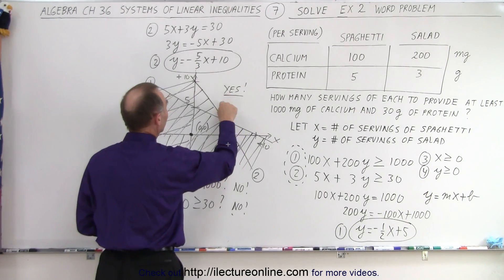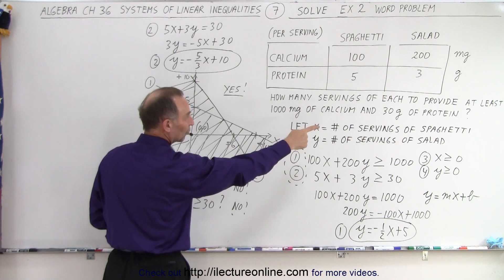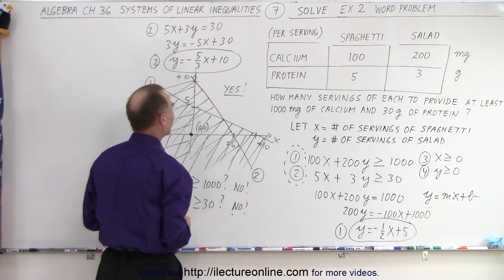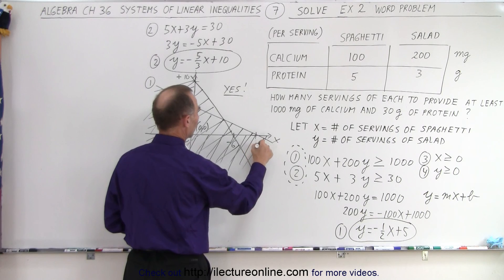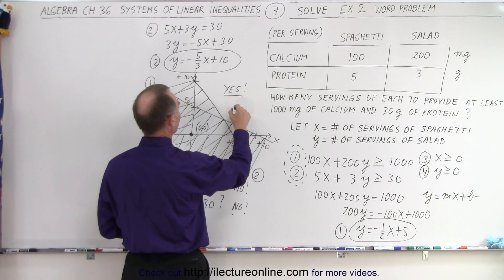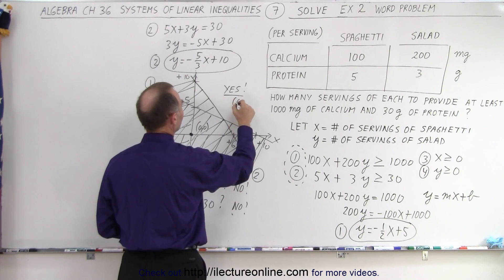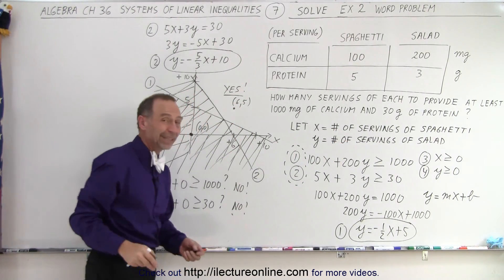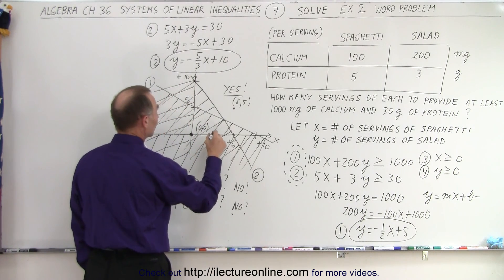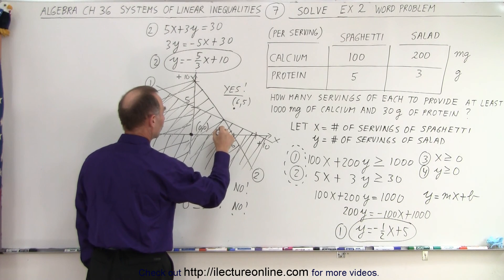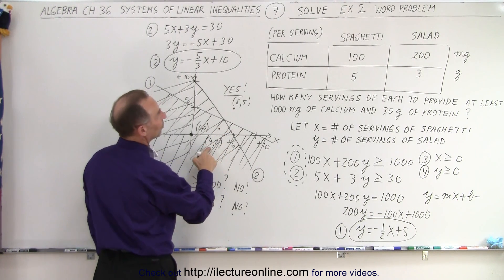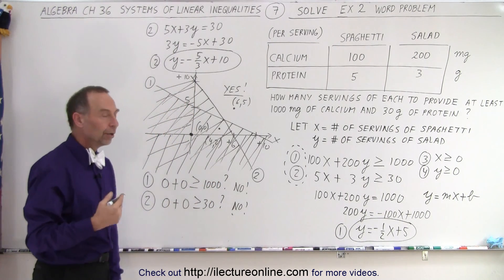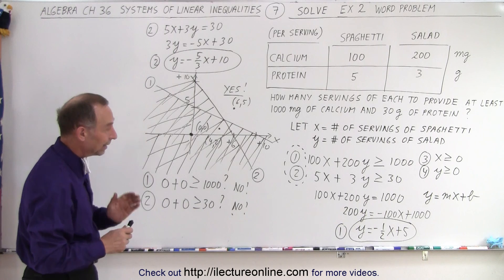Any point in this valid region gives a combination of x servings of spaghetti and y servings of salad that meets both nutritional requirements. For example, the point (6, 5) — six servings of spaghetti and five servings of salad — will definitely give enough calcium and protein. On the other hand, the point (4, 2) — four servings of spaghetti and two servings of salad — will not provide enough calcium or protein, or possibly not enough of both.